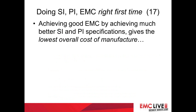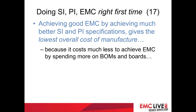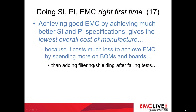Another benefit of approaching EMC this way — using better SI and PI specs — is that it gives the lowest overall cost of manufacture. It costs much less to achieve EMC and pass EMC tests by spending more on the bill of materials and the printed circuit boards than by adding filtering and shielding after failing some tests. You're still going to need filtering and shielding, but with good SI and PI specs, it'll be less — smaller, lighter, and will cost less money.